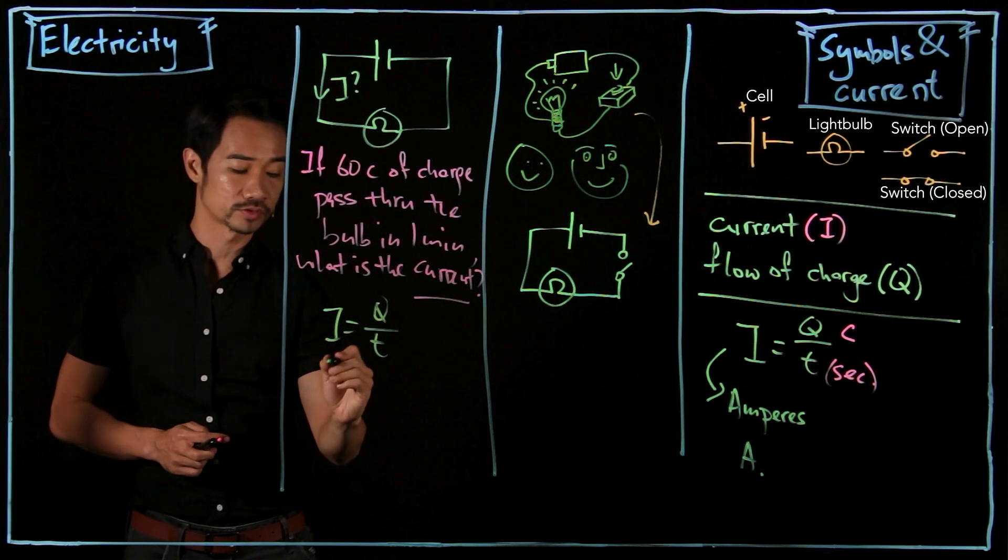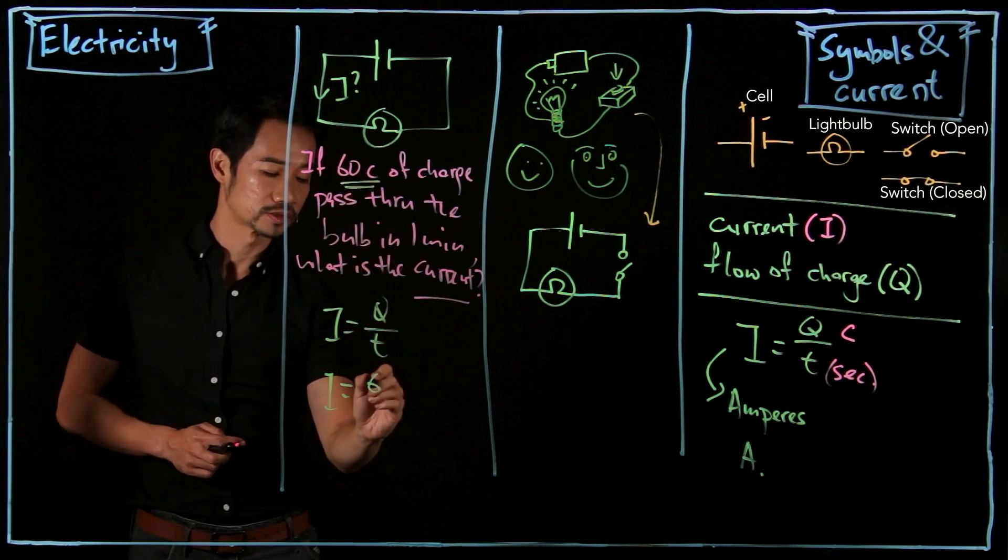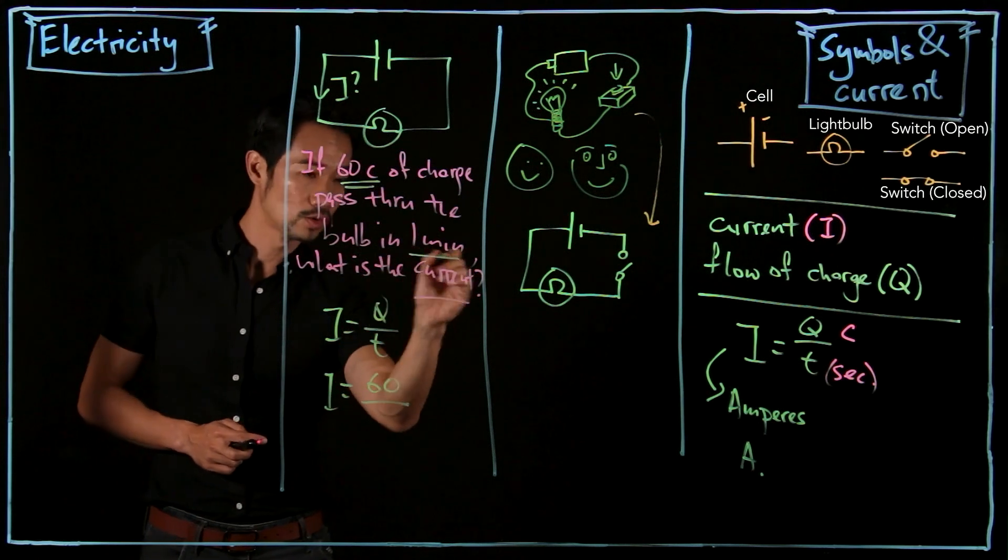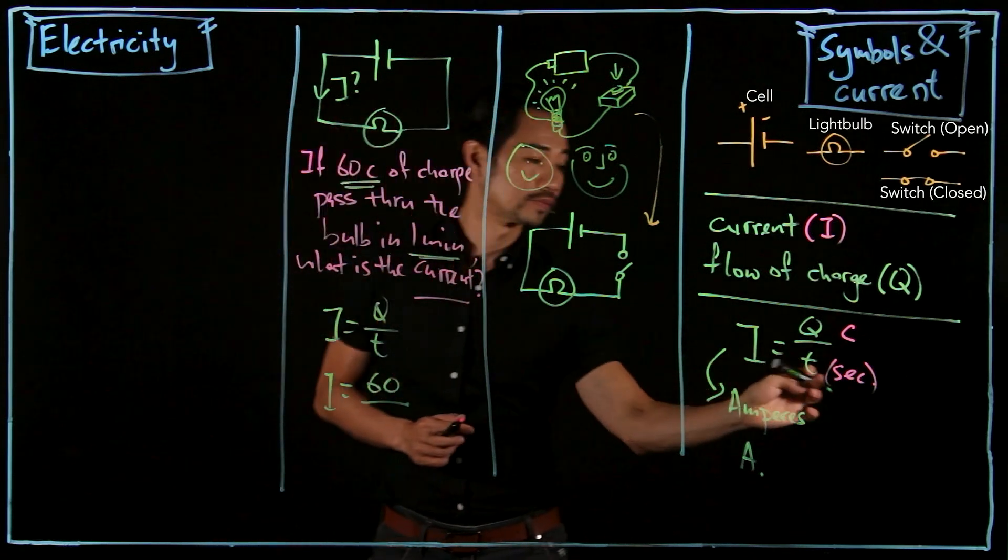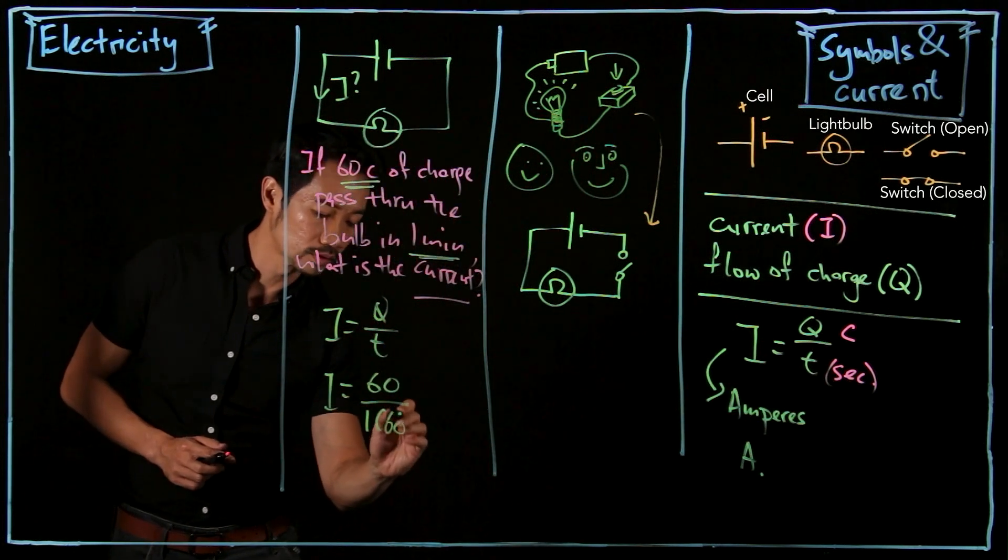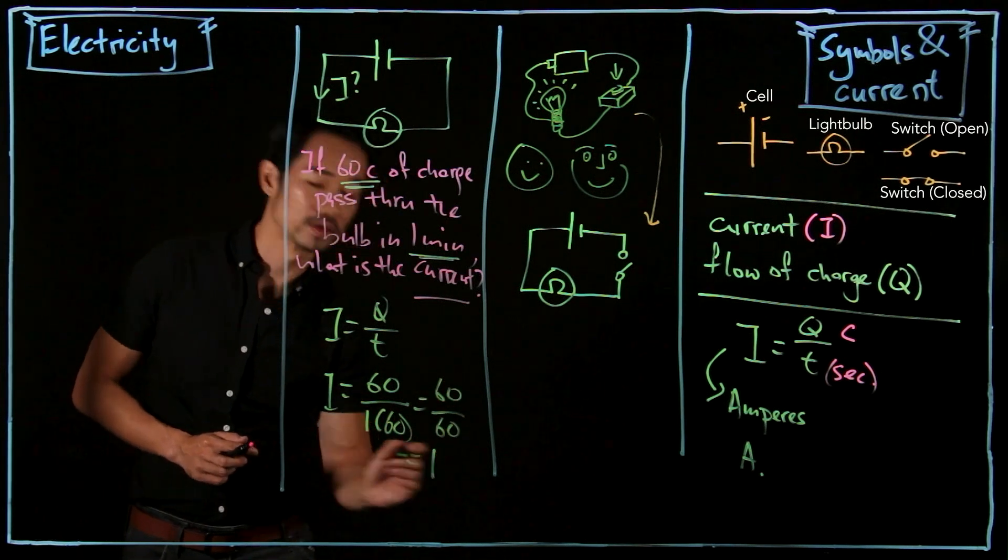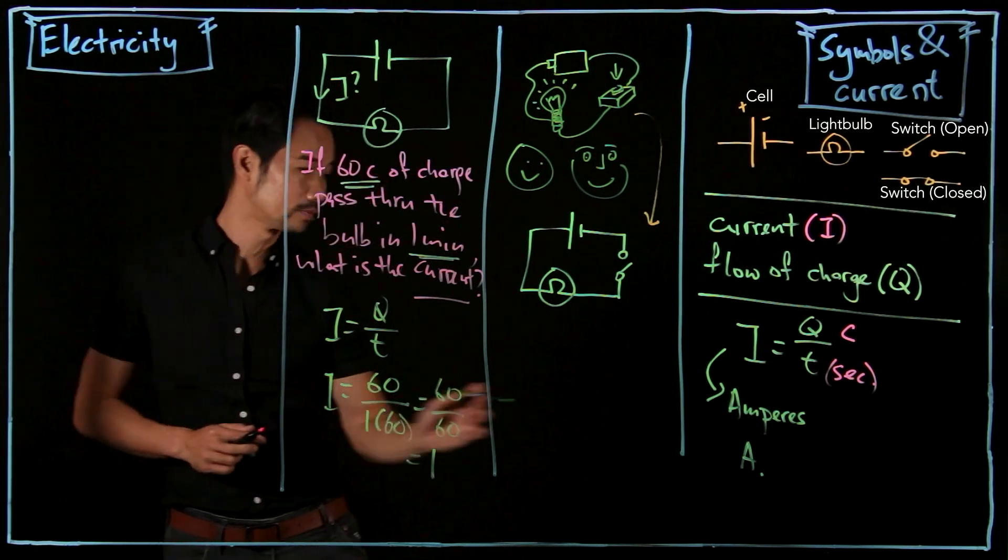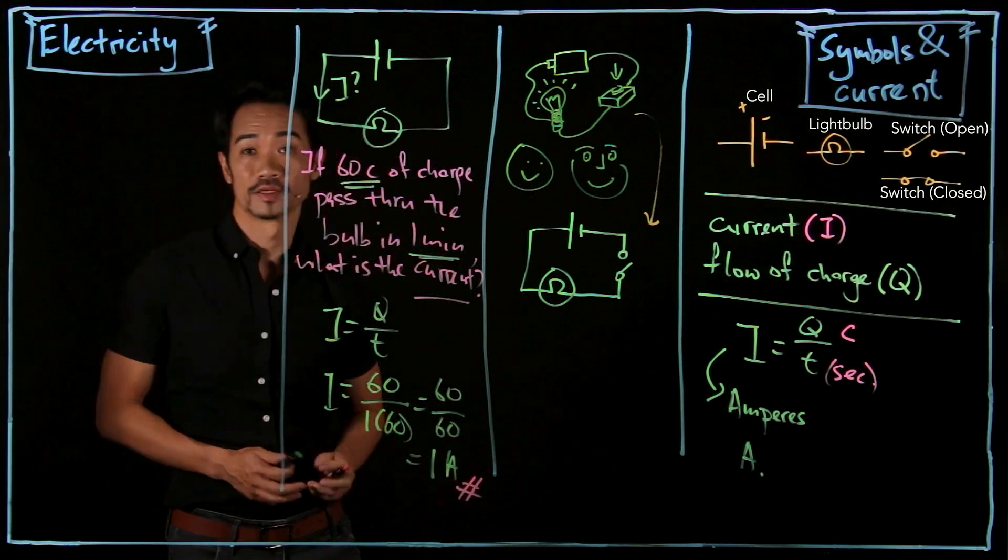Charge is given here, 60. Time is one minute. But, what is the SI unit for time over here? Seconds. So we need to convert one minute into seconds. So actually, the answer is one. And what is the unit for current? Amperes. A. So that is your final answer.